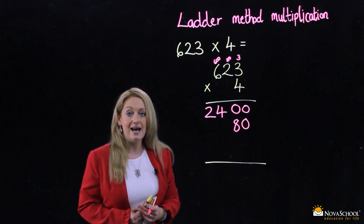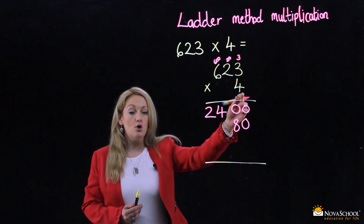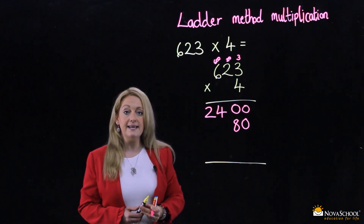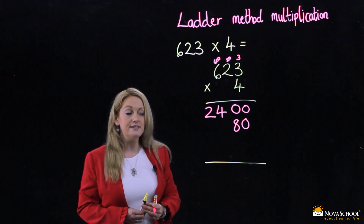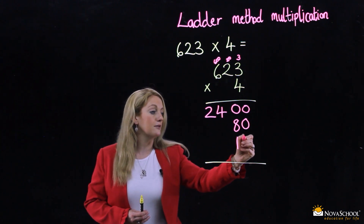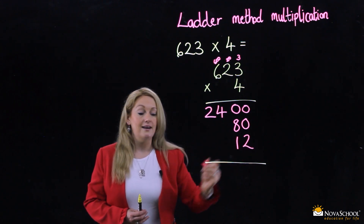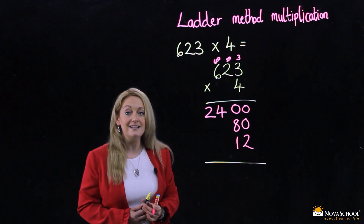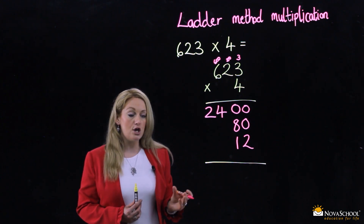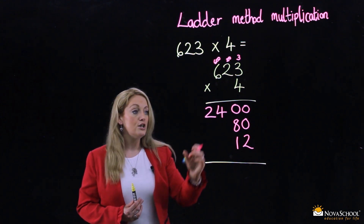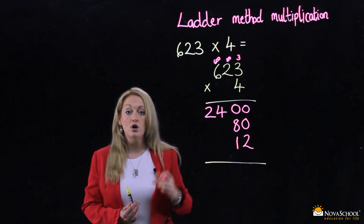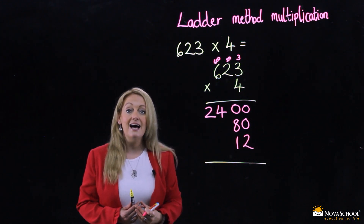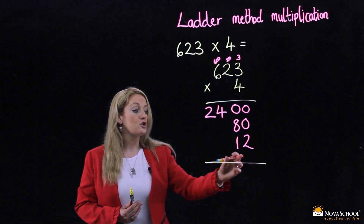Last part of the question: 4 multiplied by 3 — nice and easy, 3 times table, the answer is 12. Again, make sure you are using the correct place value. So we have 2400, we have 80, and we have 12.